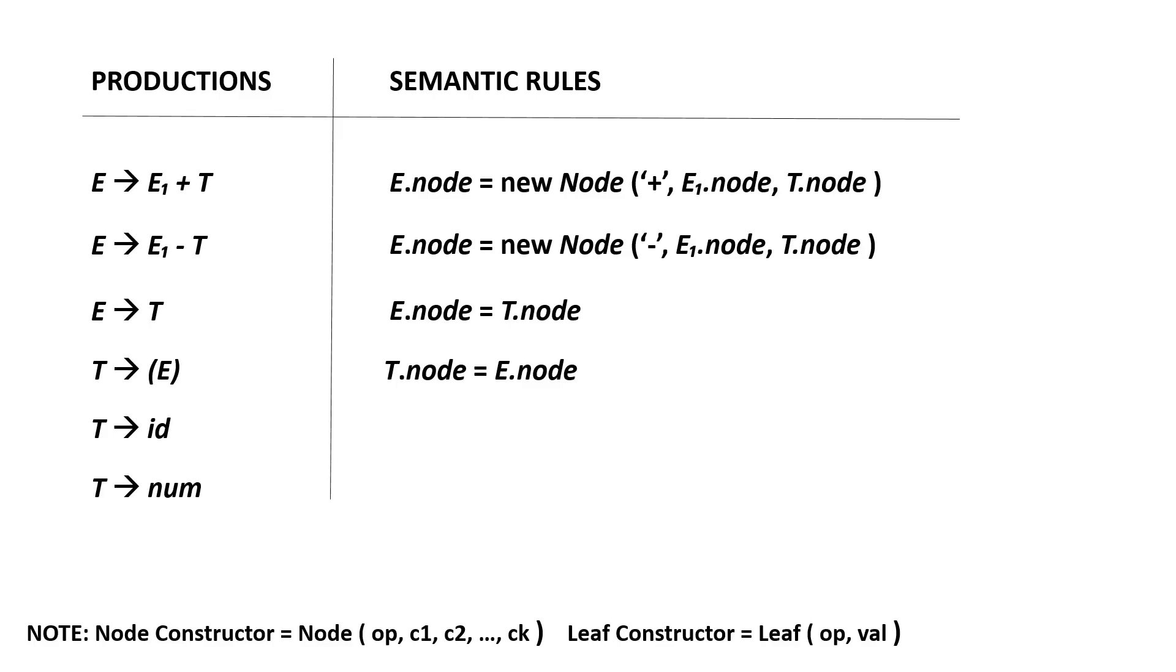t derives id will become t dot node equals new leaf, open parenthesis, id, comma id dot entry, close parenthesis. t derives num will be t dot node equals new leaf, open parenthesis, num, then num dot value, close parenthesis.